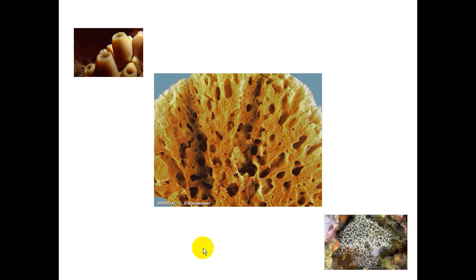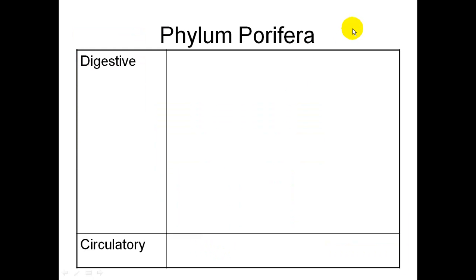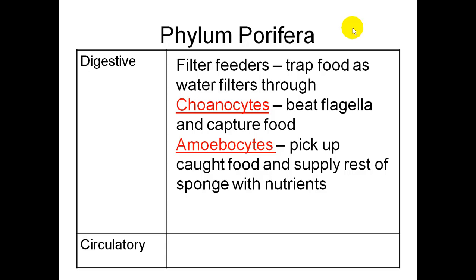Here are the three different types of what a sponge can look like depending on the type of spicules they have. Sponges are filter feeders — they trap their food as water filters through. They have choanocytes, which are ciliated cells that beat their flagella and capture their food, and amoebocytes, which pick up caught food and supply the rest of the sponge with nutrients.